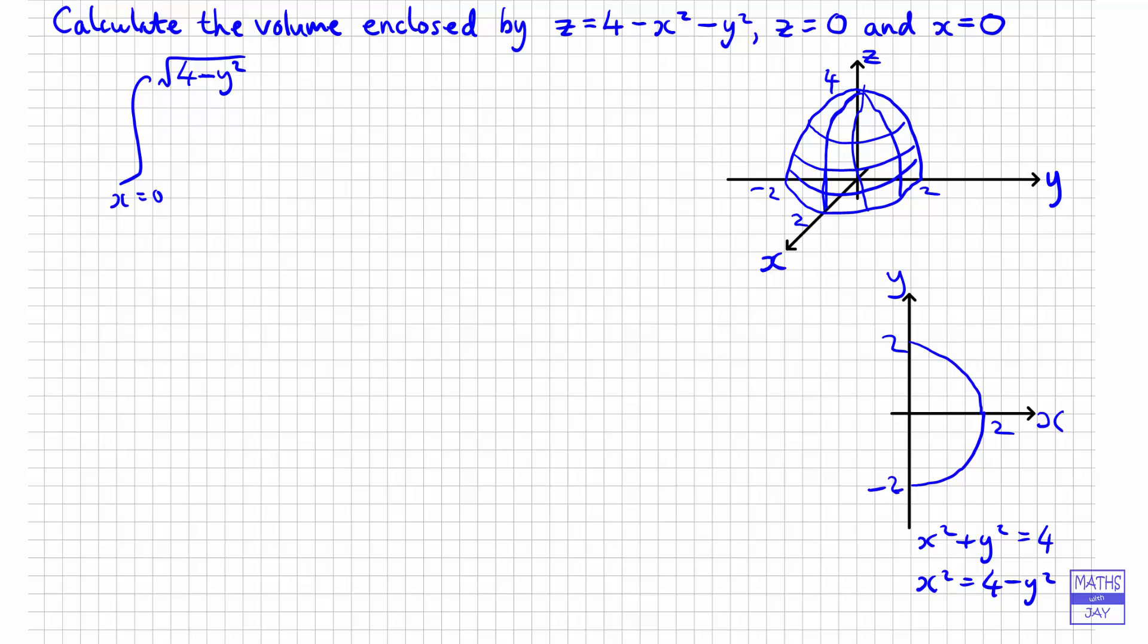So that's going to go from... Go up to the square root of 4 minus y squared. And then we've just got our z in here that we're integrating. So 4 minus x squared minus y squared dx. So that's the inner integral. And then we've got to integrate that over y going from minus 2 up to 2. So that will be dy.